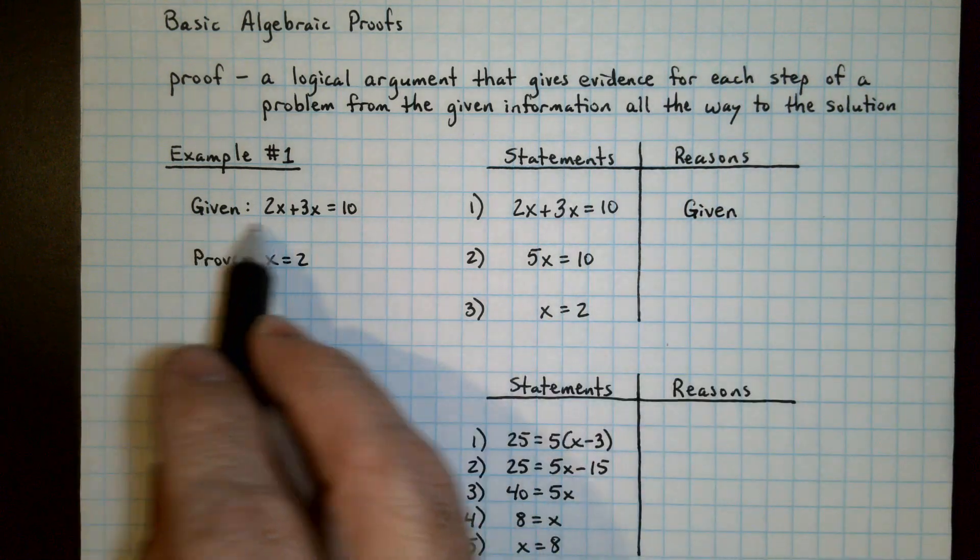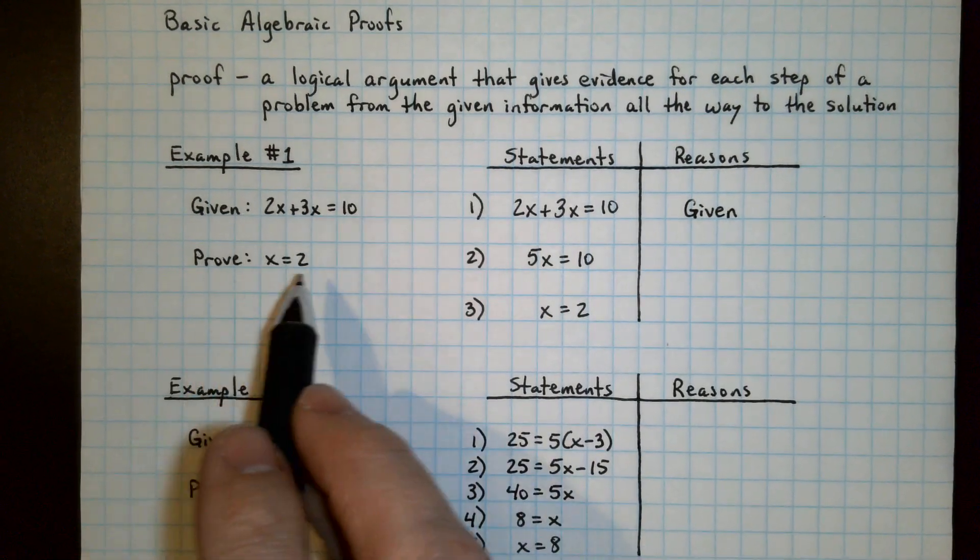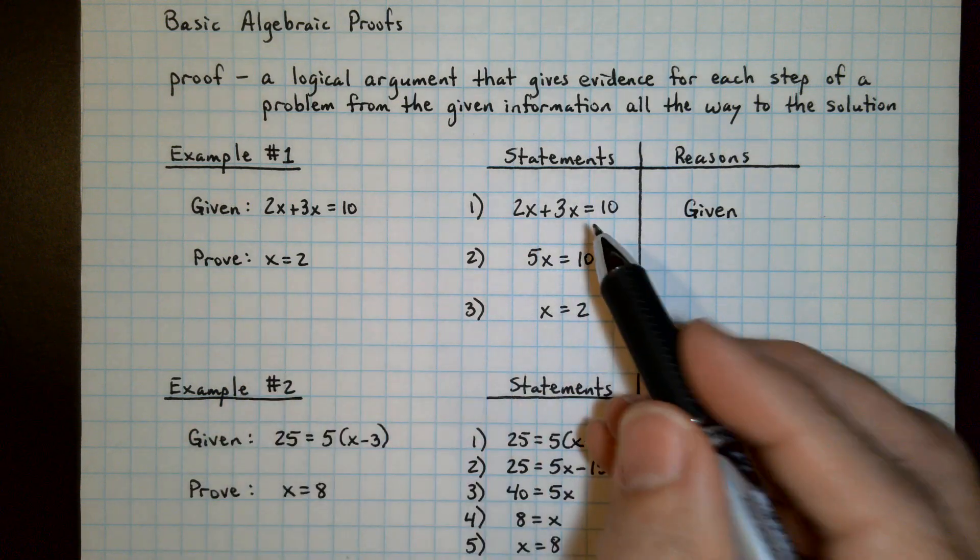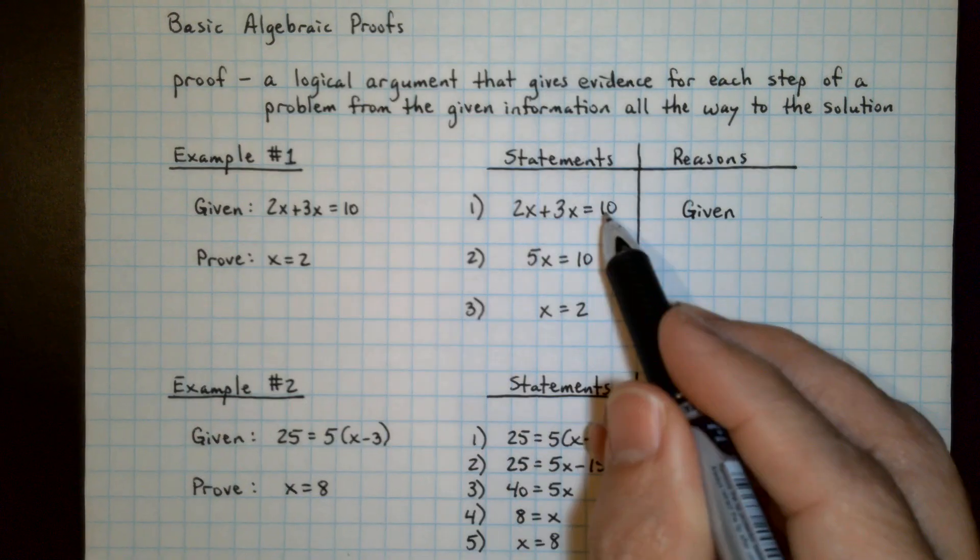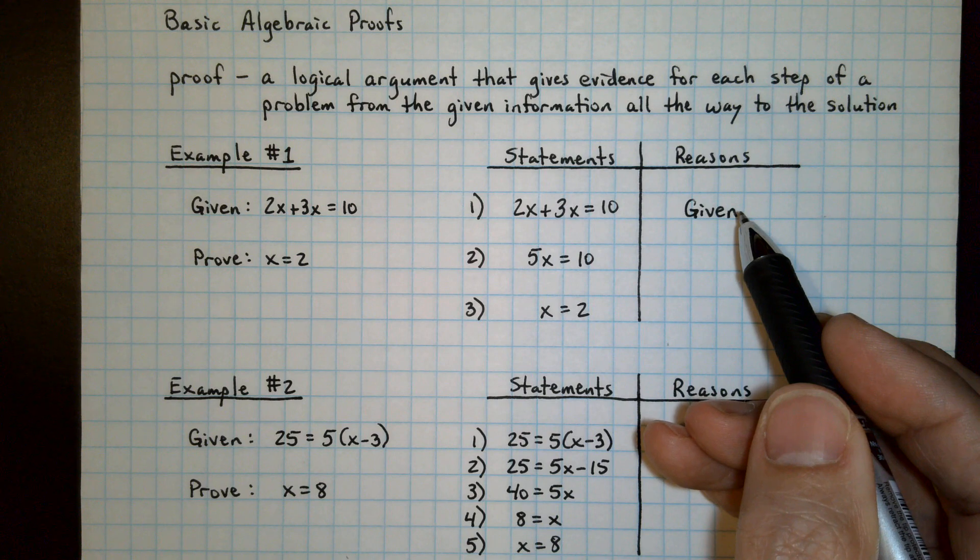The given information is here, the prove statement is here, the given statement is restated, and the reason, of course, then is given.